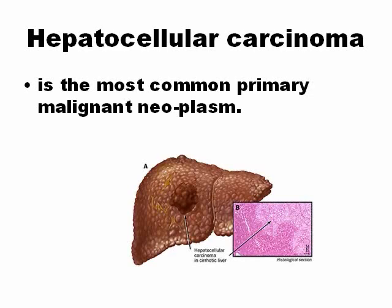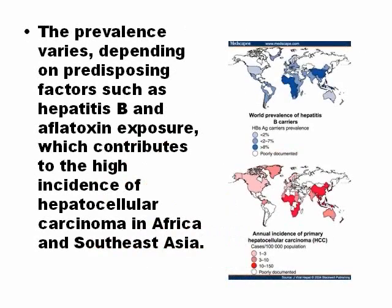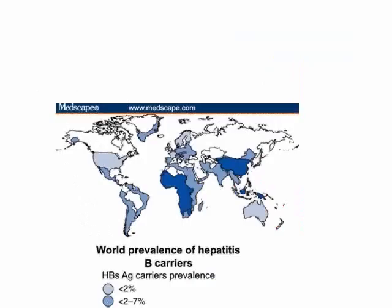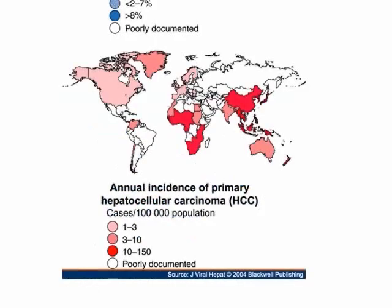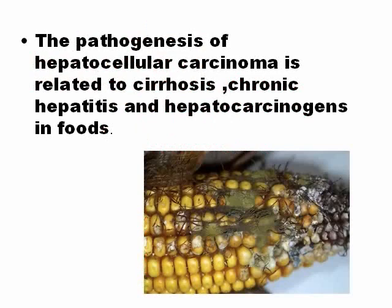Hepatocellular carcinoma is the most common primary malignant neoplasm of the liver and is related to cirrhosis. There are different prevalences worldwide, but it is more common in Africa. Some people say that the reason is the presence of aflatoxin — a substance from fungi found in different plants that can produce hepatotoxicity and is also related to liver cancer.